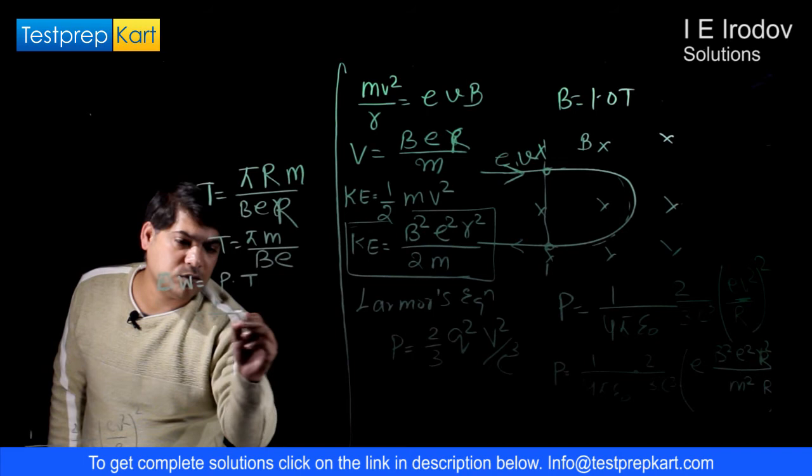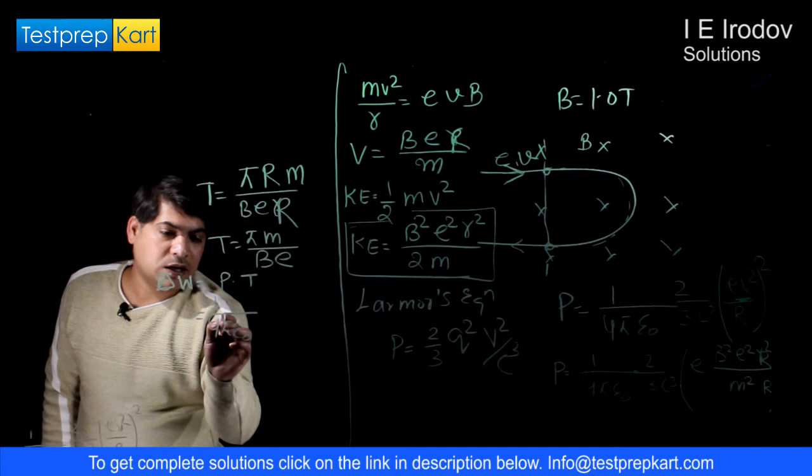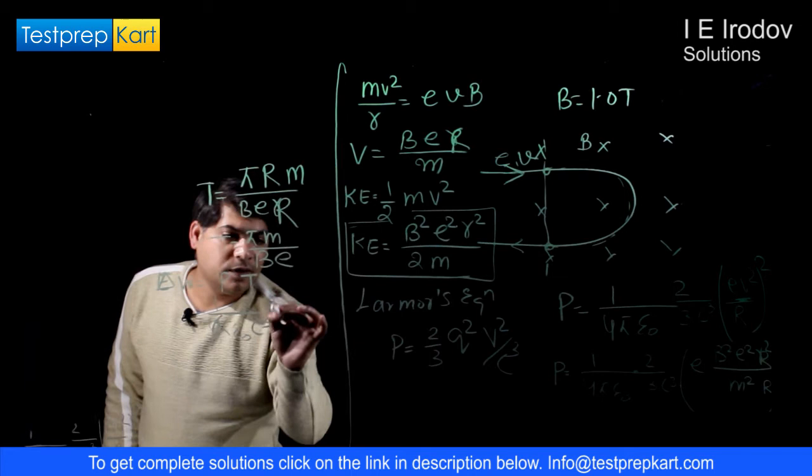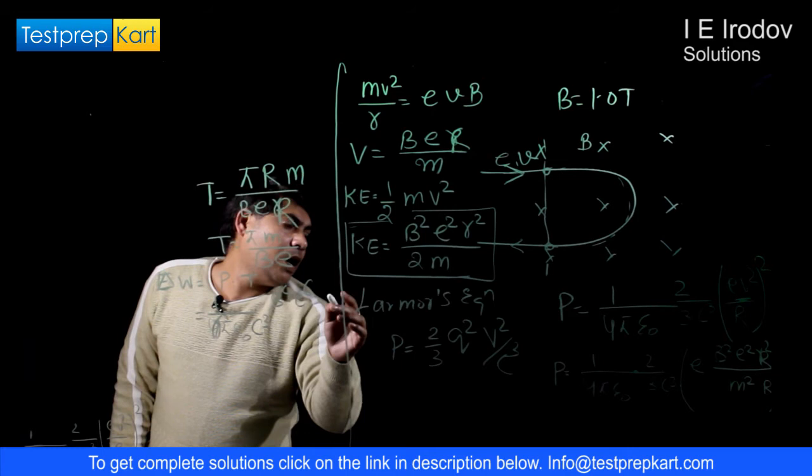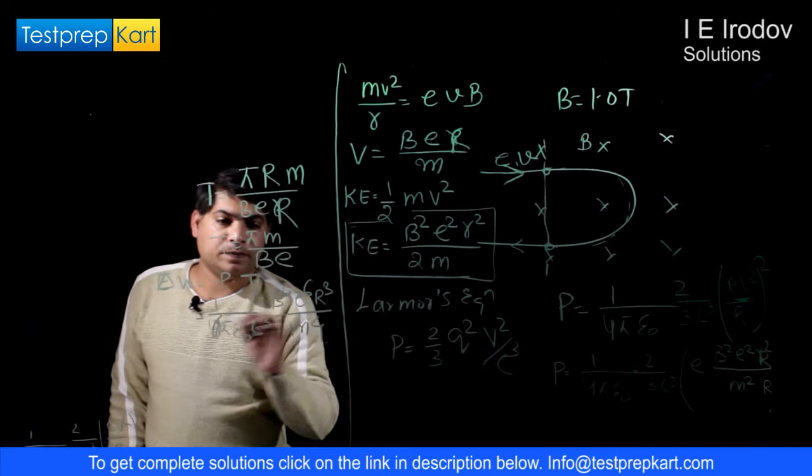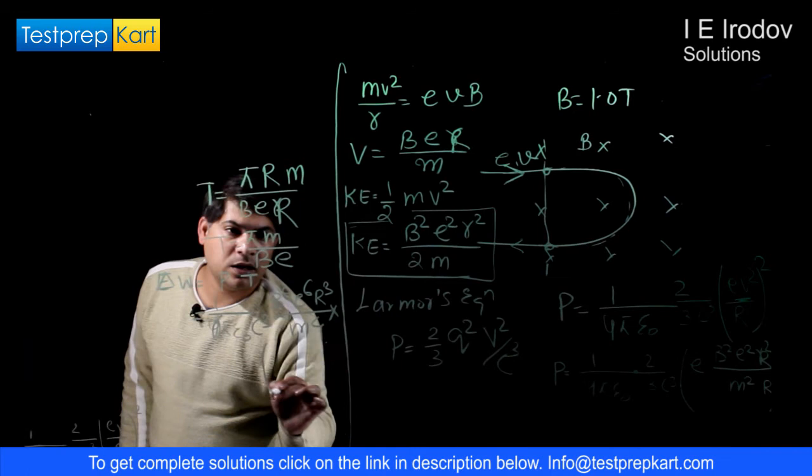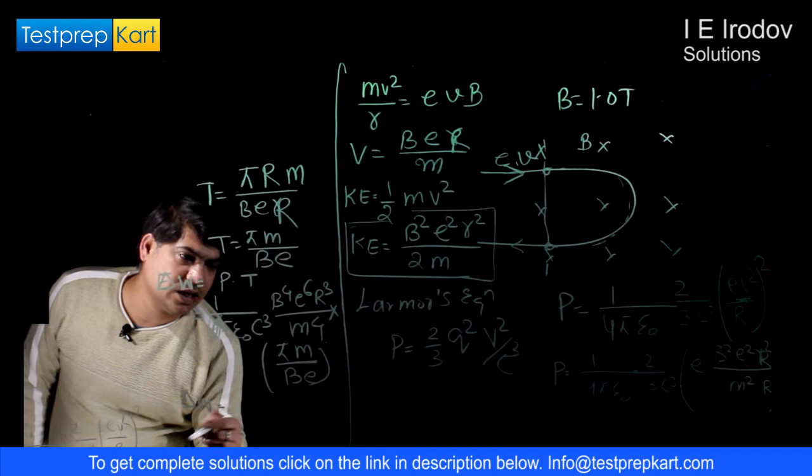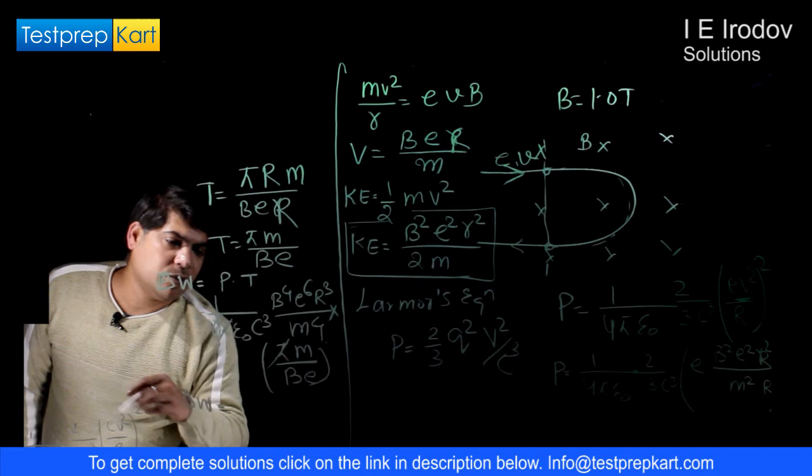So energy radiated or you can say energy lost is radiated power into time. So this radiated power is known. We can use 1/(4πε₀) or we can just write 1/(6πε₀c³) into, if we will open this term e³, so B⁴e⁶ and r³ upon m⁴ into this that is multiplied by πm/(Be).